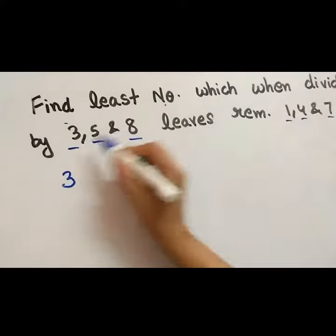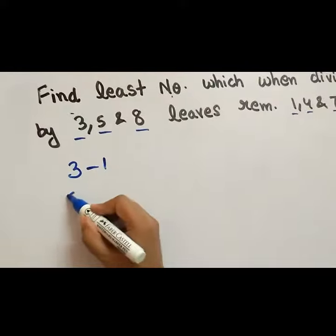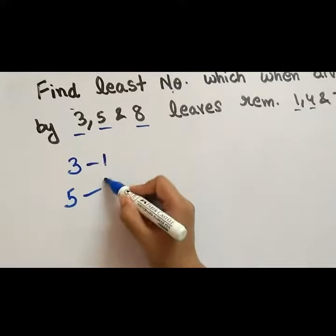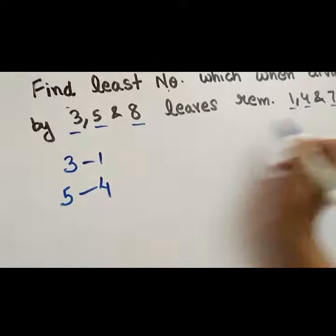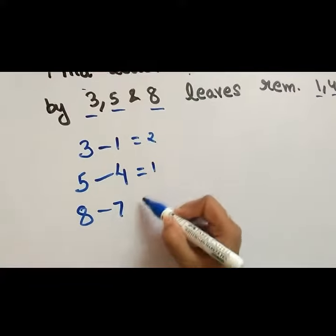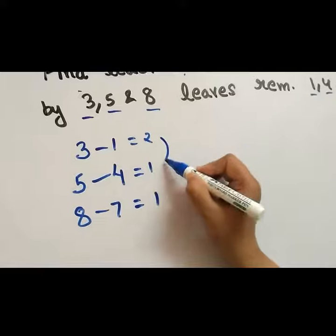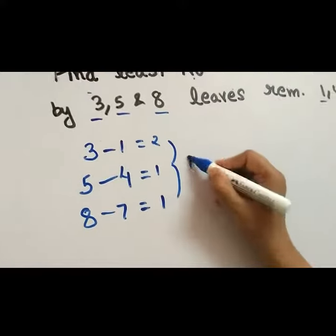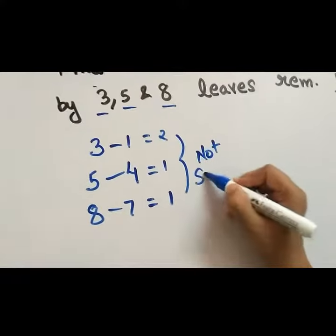Just check first. 3 minus 1, 5 minus 4, 8 minus 7. 3 minus 1 is 2, 5 minus 4 is 1, 8 minus 7 is 1. Are all these same? Not same.